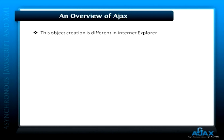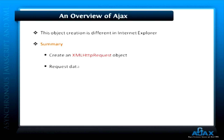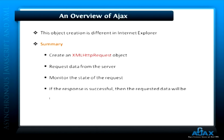Now let's conclude this lesson by summarizing the process we must carry out throughout this Ajax tutorial. First, we need to create an XMLHttpRequest object. Next, we request data from the server using this object. Then we monitor the state of the request, which is done with the help of JavaScript. If the response is successful, the requested data will be returned as a response. Finally, we have to use that response in our web page.